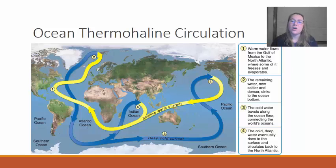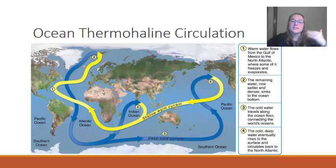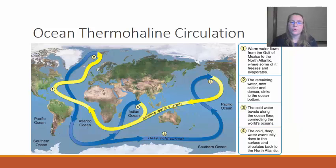Thermohaline circulation is another way to describe the distribution of heat throughout the Earth. You can see on this map that the shallow warm currents tend to bring heat from the equator towards the North Pole and the South Pole. This is what helps to regulate those temperatures in Northern Europe, Southern South America, and Southern Africa.